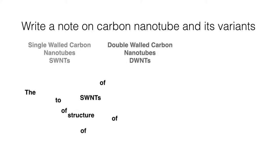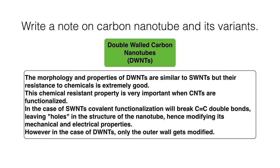Double-wall carbon nanotubes: the morphology and properties of double-wall carbon nanotubes are similar to single-wall carbon nanotubes, but their resistance to chemicals is extremely good. This chemical resistance property is very important when CNTs are functionalized.